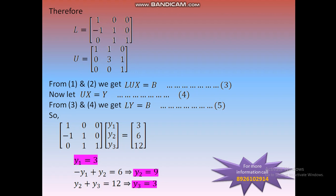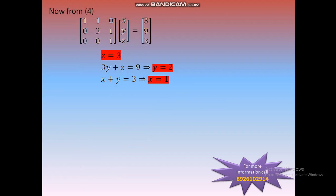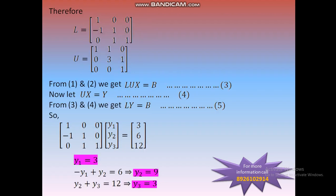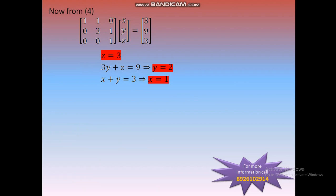We find y1=3, y2=9, y3=3. Then for Ux equals y, U is [1, 1, 0; 0, 3, 1; 0, 0, 1] and x is the column vector [x, y, z], y equals [3, 9, 3]. Applying backward substitution: from the last equation z=3; from 3y plus z equals 9, y=2; from x plus y equals 3, x=1.